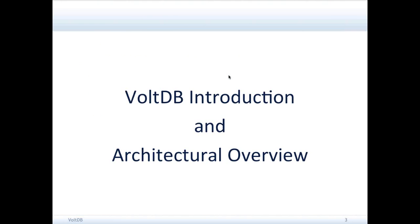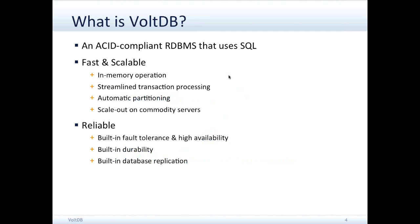So we'll start with an introduction to VoltDB and the architecture. What is VoltDB? It's an ACID-compliant relational database that uses SQL. It's fast and scalable and very reliable. It's fast because of in-memory operation and a streamlined transaction processing mechanism. It partitions data across multiple servers in a cluster so it can scale to meet any throughput requirements. And it has reliability features including high availability, durability to disk, and database replication.